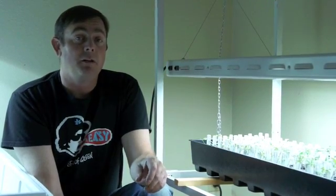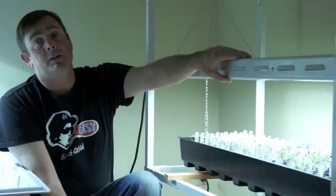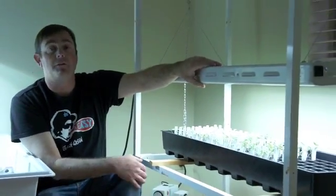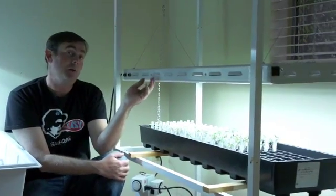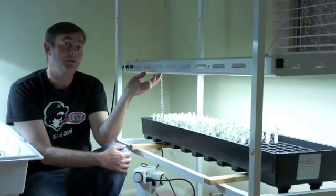Today we're going to show you how to build a hydroponic seedling starting system. The parts we're using are a Sunblaze 48 T5 fixture. It's got eight four-foot bulbs in it and they're the veg spectrum or the 6500 Kelvin spectrum.